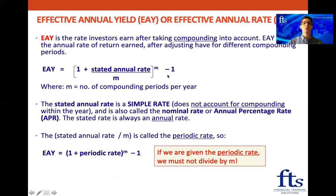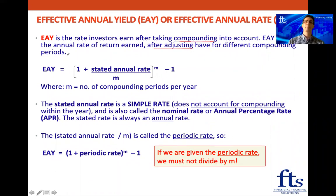Now we need to move on to the effective annual yield, or some people also call it the effective annual rate. This is the rate investors earn after taking compounding into account. Compounding is when we earn interest on interest. The effective annual yield reflects the annual rate of return earned after adjusting for different compounding periods, because some investments pay their interest on a quarterly basis and other investments pay their interest on a monthly basis. So in order to compare apples with apples, we need to work out the effective annual yield of both investments. We start with the stated annual rate, which is a simple rate that doesn't account for compounding within the year.